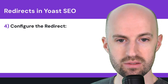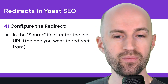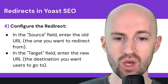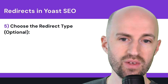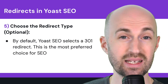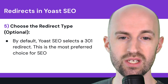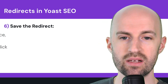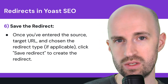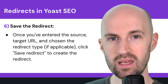Next, you would configure that redirect. In the source field, you would enter the old URL — the one you want to redirect from. In the target field, you would enter the new URL or destination you want users to go to. Step five is to choose the redirect type, and this is optional. By default, Yoast SEO selects a 301 redirect or permanent redirect, which is the most preferred choice for SEO purposes. Next, save the redirect: once you've entered the source and target URL and chosen the redirect type, click on Save Redirect to create it and make it active.